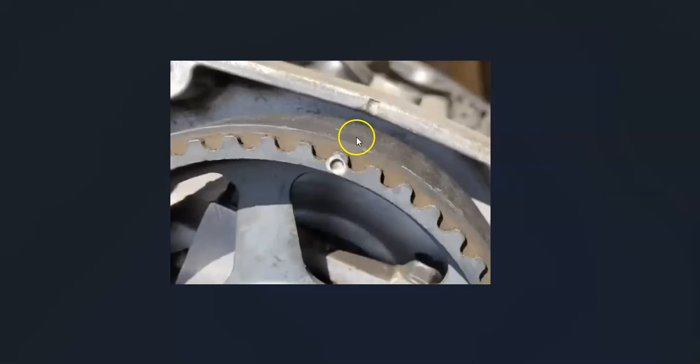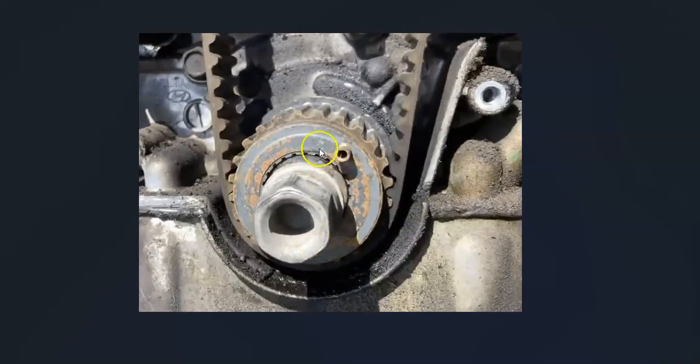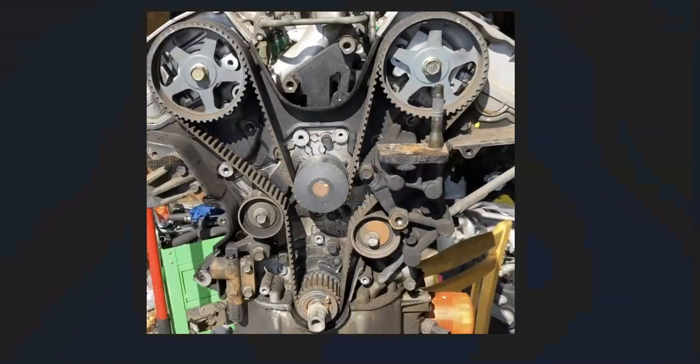But if one of these notches is off—say the other two will line up, but this notch over here is off to the left or right, or the top two match up and this one is a little bit off—then that means that timing belt has slipped and it would need to be replaced and everything would need to match back up.